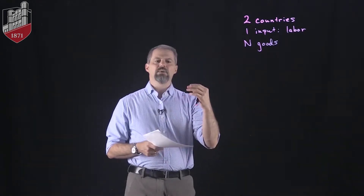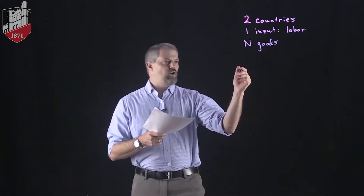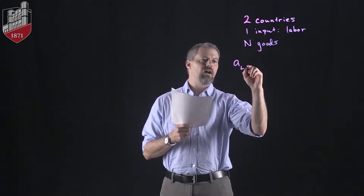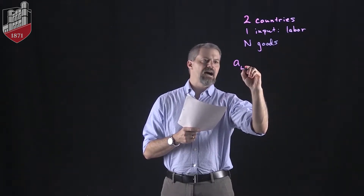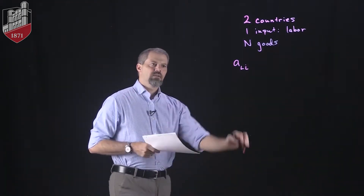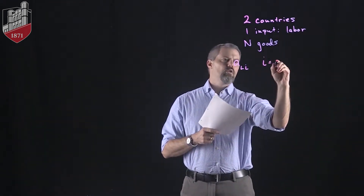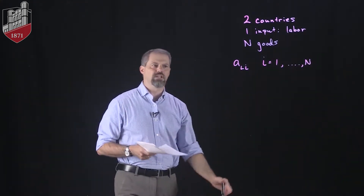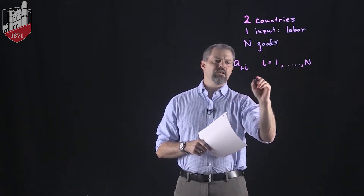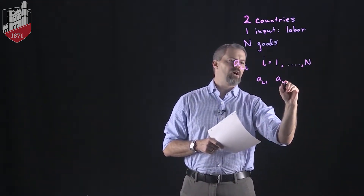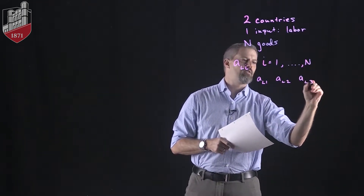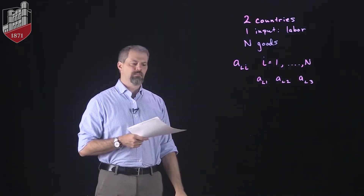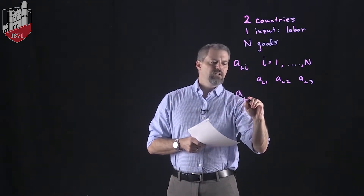What that means is that there's going to be a unit labor requirement for each good. Our unit labor requirements for home will be indexed by i, where i goes from 1 up to N. So there's a unit labor requirement for each good — if there were 3 goods, there's a unit labor requirement for the first, second, and third good. That index i just tells us which good we're dealing with.